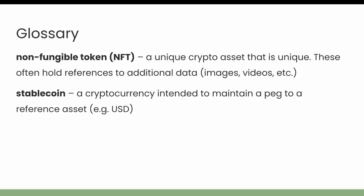Non-fungible tokens, or NFTs, are unique crypto assets. The big distinction here is that unlike Bitcoin, where one specific Bitcoin token is not necessarily any different or more valuable than any other, NFTs are individually unique. So one NFT, even though it may have a reference to the same exact image as another NFT, is distinguishable and treated differently from that other asset. These often hold references to additional data.